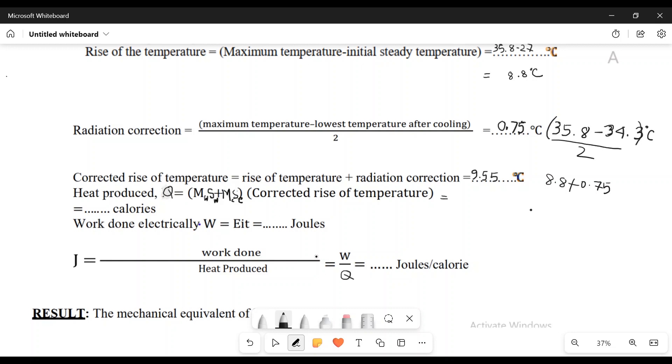Total heat produced: the mass of water is 73.56 times specific heat of water which is 1, plus calorimeter mass 49.41 times specific heat of calorimeter 0.09, all multiplied by corrected temperature rise 9.55. This gives us 744.97 calories.